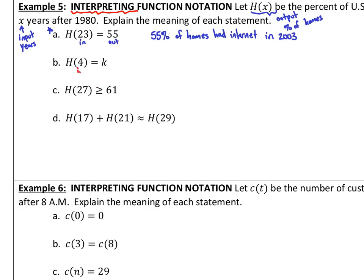Letter B. If I input a 4, the output is just some unknown number K. So, we're going to follow the same procedure as up above. Some unknown K% of homes had Internet in, okay, that's 4. That's 4 years after 1980 in 1984.